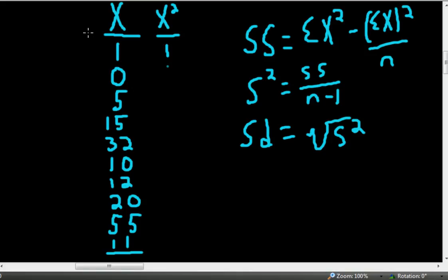1 squared, 0 squared, 5 squared, and so on. So we're simply squaring each score for x.